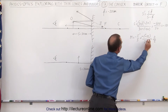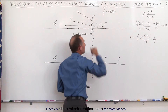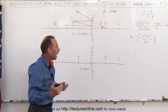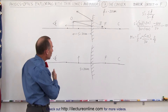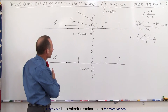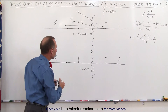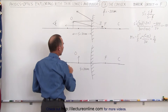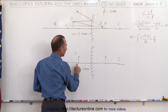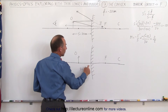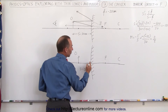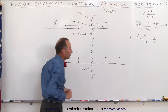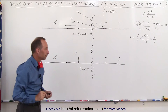Positive magnification means that the image is upright. Now, what happens when we bring the object closer? We're going to move the object to a distance of 20 centimeters in front of the mirror, which is the same distance as from the mirror to the focal point behind it.